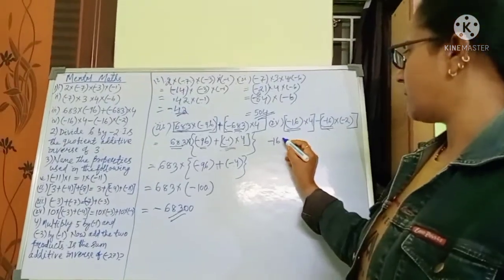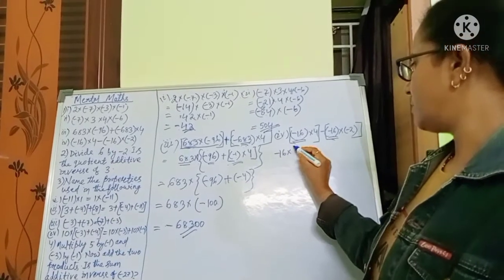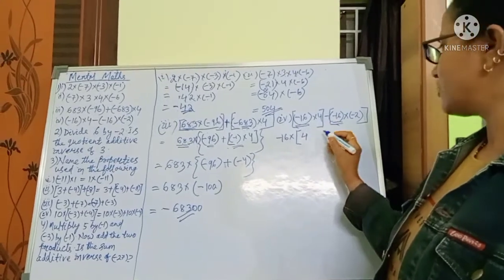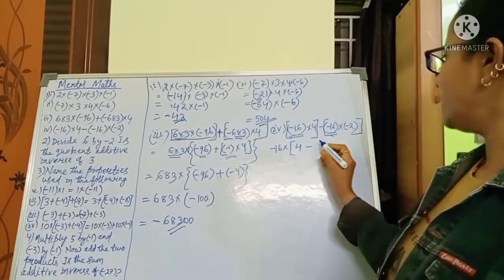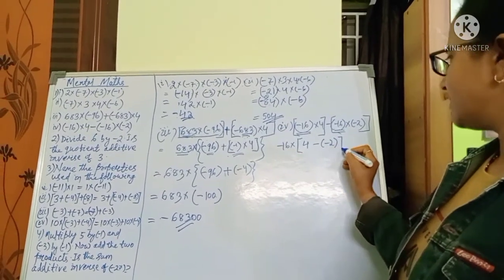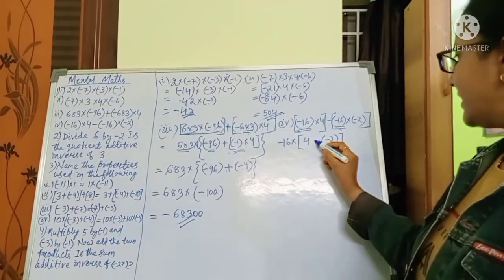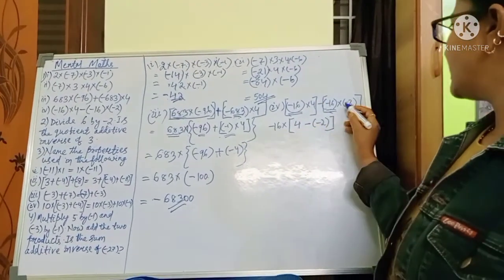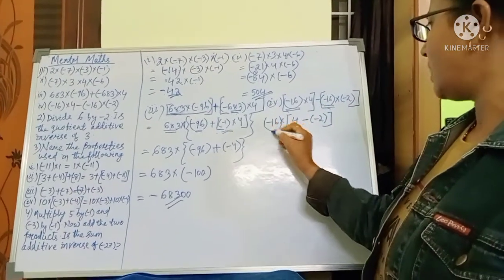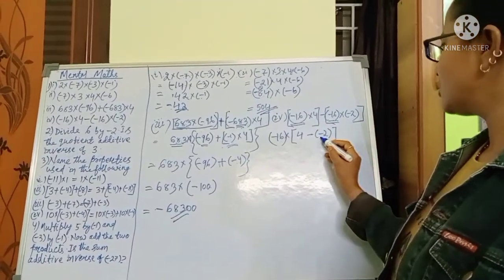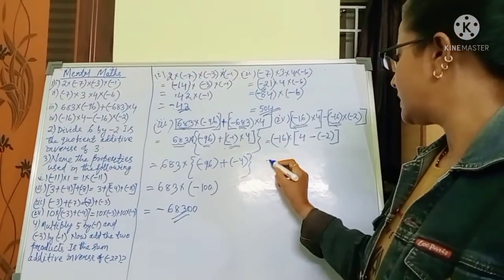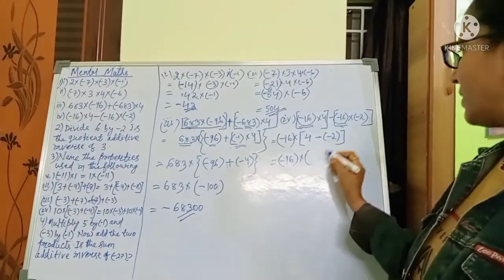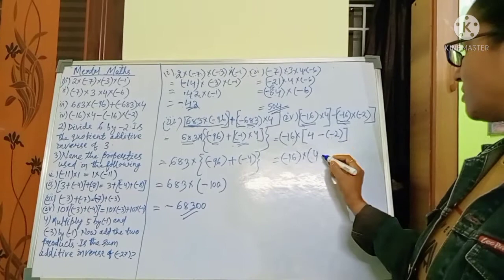Minus 16 will come out of the bracket. Inside the bracket, what remains? The first part gives 4. In the second part there is a minus, and this minus comes here, so when minus 16 has come out, the remaining part is minus 2. So: minus of minus 2 is plus 2. We have 4 minus of minus 2 equals plus 2 inside.